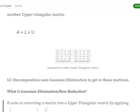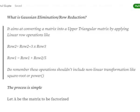How do we implement LU decomposition over a given matrix? Using Gaussian elimination, also called row reduction. It aims at converting a matrix into an upper triangular matrix by applying linear row operations, such as R2 = R2 - 3·R3, or R1 = R1 + R2/5. Basically, we apply a linear transformation on one row and add or subtract it from another row, converting the matrix into upper triangular form.